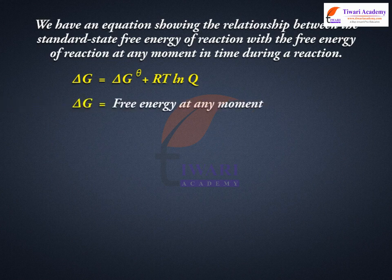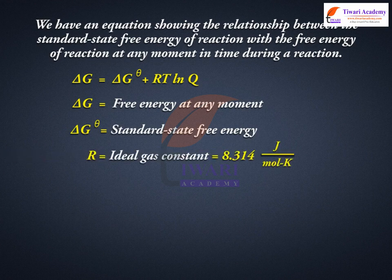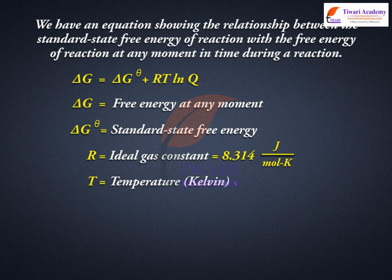Delta G is equal to free energy at any moment. Delta standard G is equal to standard state free energy. R is equal to the ideal gas constant, equal to 8.314 joules per K·mole. T is equal to temperature in Kelvin.